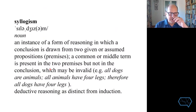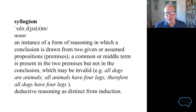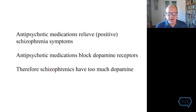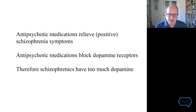However, I want to be cautious and refer to the term 'syllogism' — a logical form of reasoning where a conclusion is drawn from a missing middle connection between two things. Like: all dogs are animals, all animals are quadrupeds, therefore all dogs have four legs — except those that have lost one. In the context of schizophrenia: antipsychotic medicines relieve positive schizophrenia symptoms; antipsychotic medications block dopamine receptors; therefore schizophrenia patients have too much dopamine. It doesn't actually follow — it could be that the problem lies elsewhere and it just so happens that dopamine blocking alleviates the symptoms.